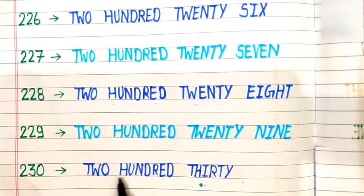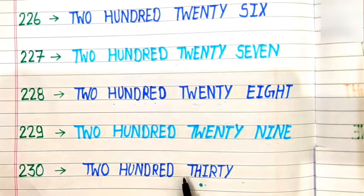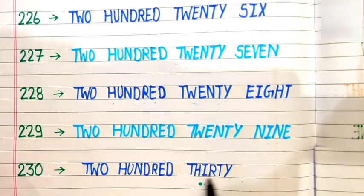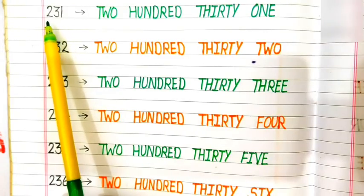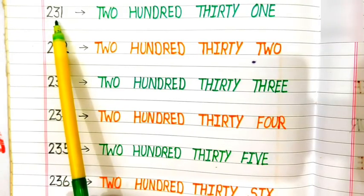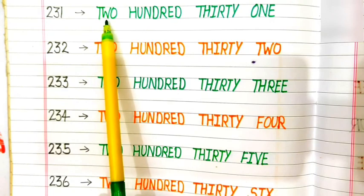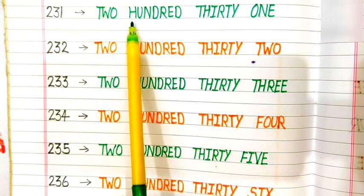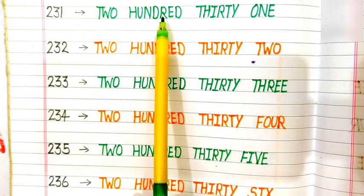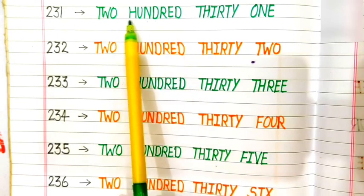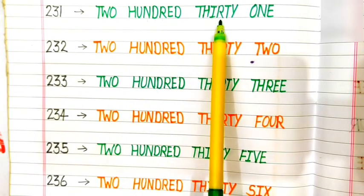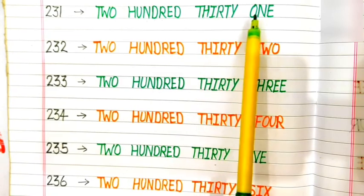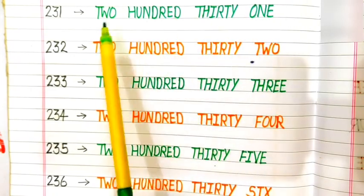230: T-W-O H-U-N-D-R-E-D T-H-I-R-T-Y. 230. 231: T-W-O H-U-N-D-R-E-D T-H-I-R-T-Y O-N-E. 231.